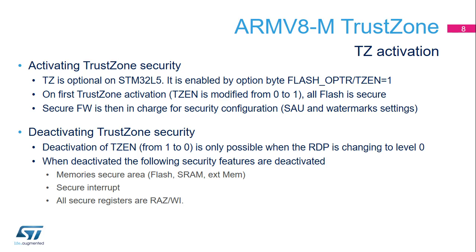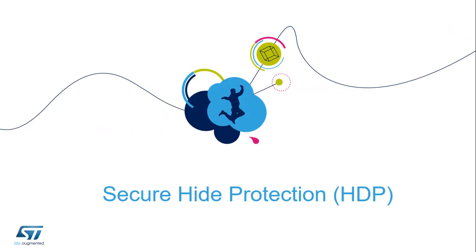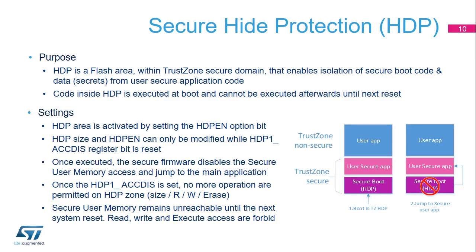Deactivation of TrustZone can only be done during the RDP level regression from level 1 to level 0 with a flash mass erase. Let's take a closer look at the Secure Hide Protection feature. Secure Hide Protection, or HDP, is an additional protection mechanism within the TrustZone secure domain. It allows the development of a secure application running only once after reset before jumping to the user secure application. A typical use case is to provide a secure boot application isolated from the rest of the main application. The code embedded in HDP is executed first, and at the end of its execution, it jumps to the Secure User Application.